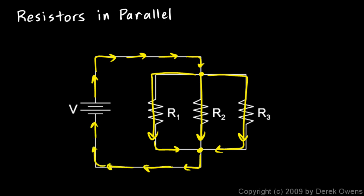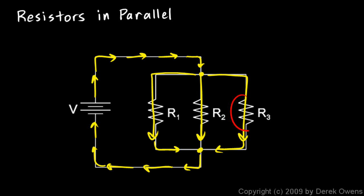The point is that the current splits — some of it goes down one branch, some down another, and some down another. You might not have three branches; you might have two, four, or even 100 or 1,000. But the key point about a parallel circuit is that the current divides.